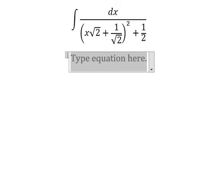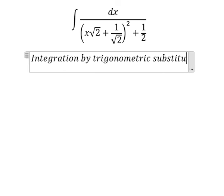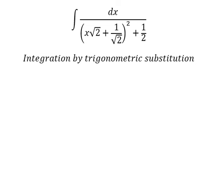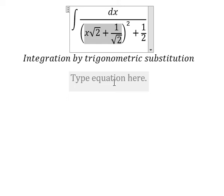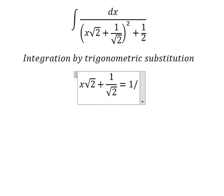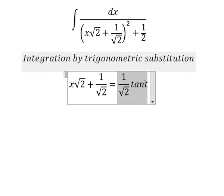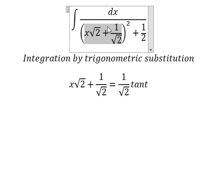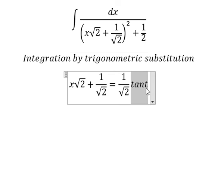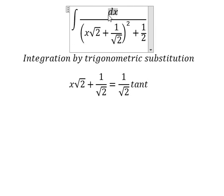Now we can use integration by trigonometric substitution. So I will put this one equals to one over the square root of two times tan(t), because substituting this gives us one over two times tan²(t) plus one over two. We can do factorization: tan²(t) plus one, which we change to sec²(t), and then simplify with dx.